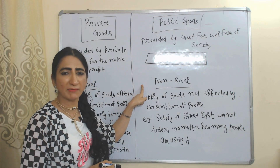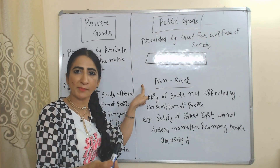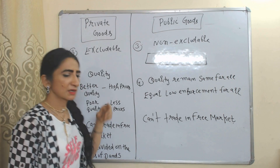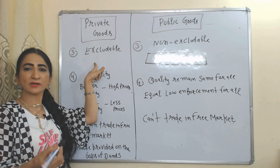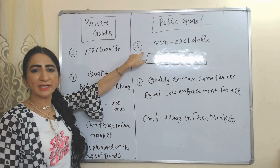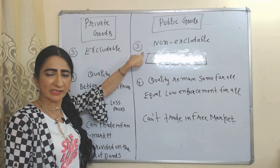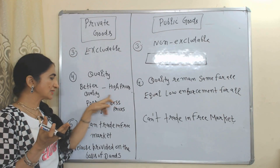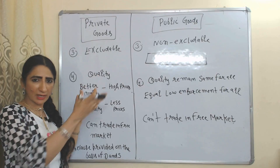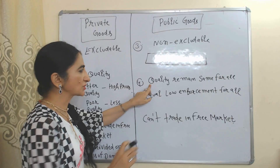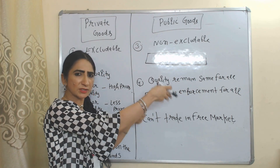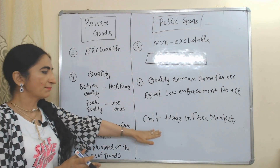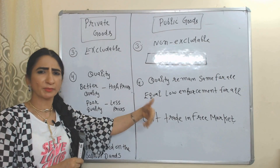But public goods are non-rival — supply of public goods is not affected by consumption, for example street light supply will not reduce no matter how many people use it. Private goods are excludable: if people are not paying, you can exclude them. But public goods are non-excludable — you cannot exclude people whether they pay taxes or not. For private goods, better quality means higher prices and poor quality means less price, so quality differences exist. But for public goods, quality remains the same — for example, same law enforcement for all. Private goods can be traded in a free market based on demand and supply, but public goods cannot be traded in a free market as they are not provided on the basis of demand and supply.